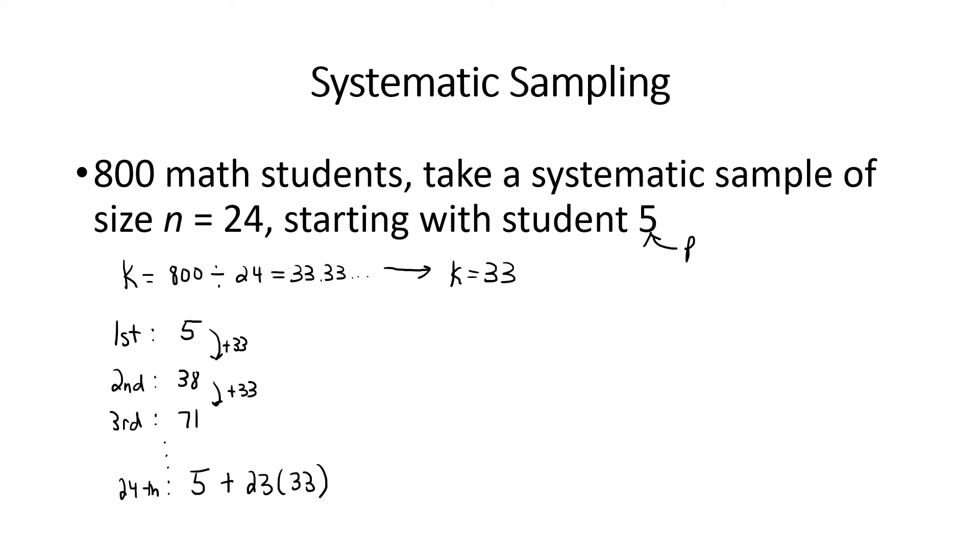So on your calculator you'd multiply 23 by 33 and you would get 759, add 5 to that and that's person 764. In general, to get the last person you start with p and then you add n minus 1 times your step size k.